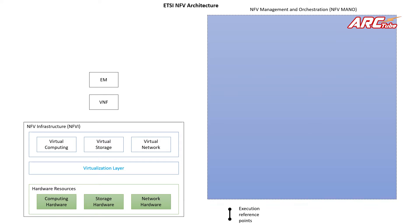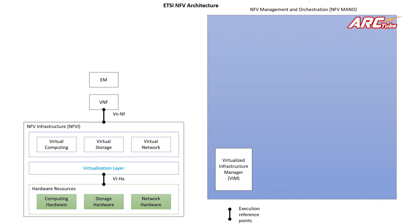If you look at the architecture, we have different reference points or interconnections, sometimes implemented as APIs. One such reference point is between the hardware resources and the hypervisor (virtualization layer) — it is named Vi-Ha, where Vi stands for Virtual and Ha stands for Hardware. Another very important reference point is between the VNFs and the NFVI, referred to as Vn-NF.